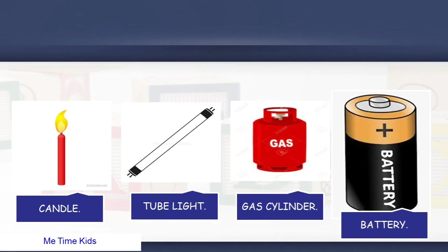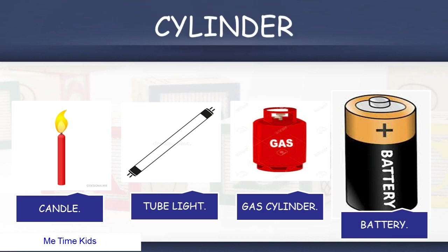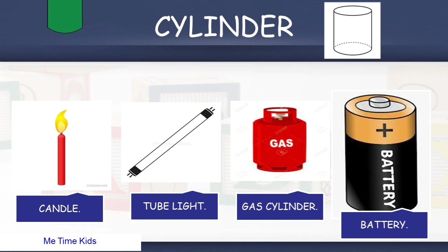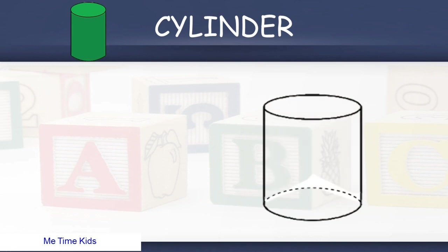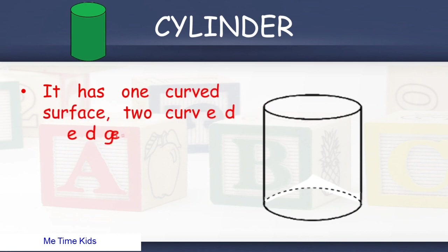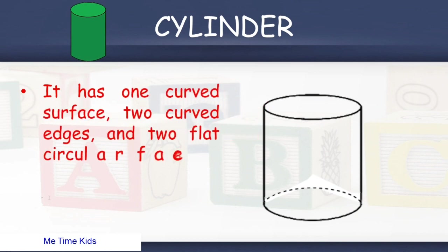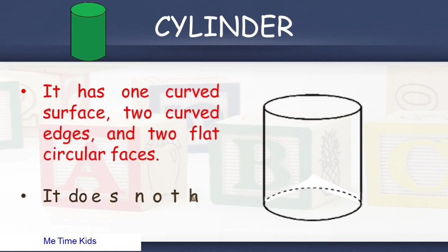Third is cylinder. Some examples of cylinder are Candle, tube light, battery, and gas cylinder. Let's see its properties. It has 1 curved surface, 2 curved edges, and 2 flat circular faces. It does not have any vertex.